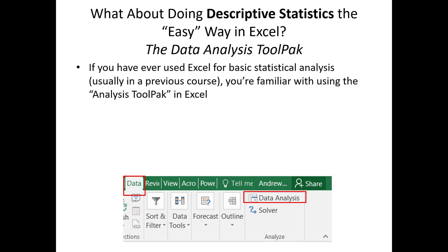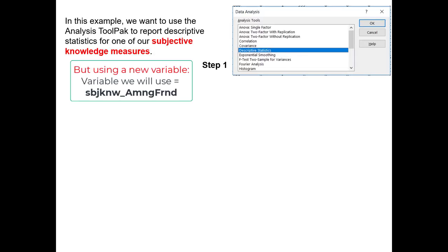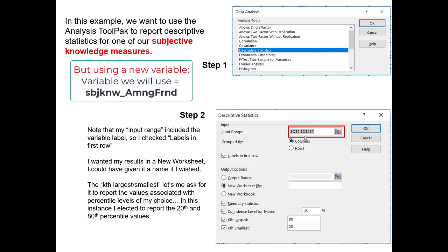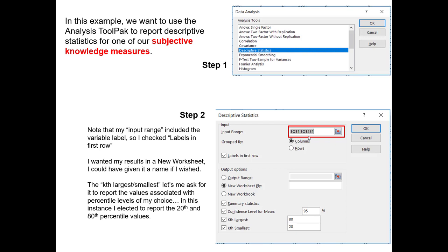If you don't have it installed on your particular version of Excel yet, just Google how to install it — it's very easy to do. To illustrate how we could use the Data Analysis ToolPak to replicate what we did in example one, we open it up and select that we want to do descriptive statistics, then select the input range which includes the header.